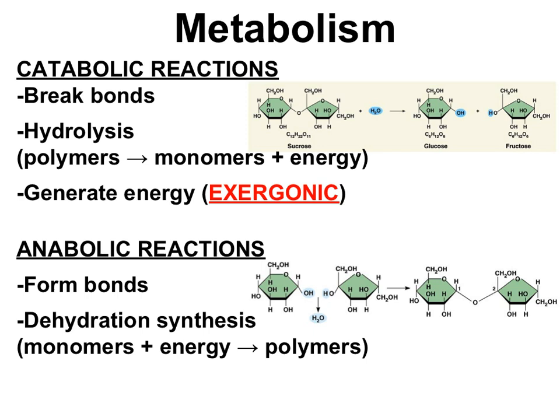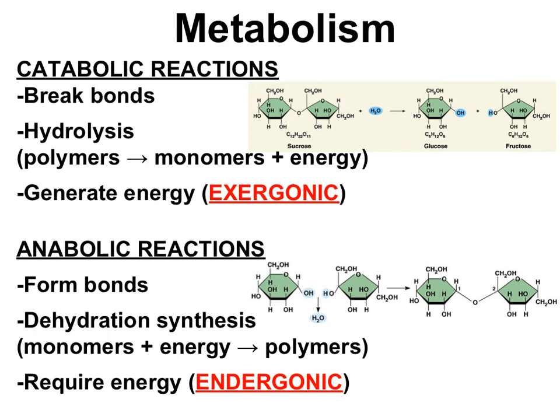Anabolic reactions are where polymers are built — polymers are built when chemical bonds are made between monomers. In the biochemistry unit, we called these reactions dehydration synthesis reactions. In the example shown here, two monosaccharides, glucose and fructose, are being linked together by dehydration synthesis to make a disaccharide sucrose by forming a glycosidic bond. Anabolic reactions require an input of energy to build bonds. The name for a reaction that requires energy input is an endergonic reaction.